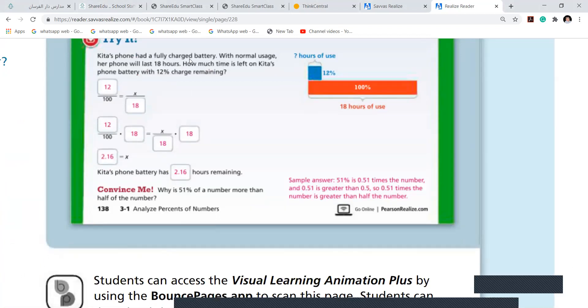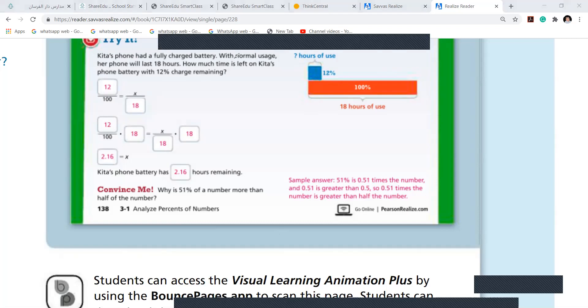Kita's phone has fully charged battery with normal usage. Her phone will last 18 hours. Normally, if she doesn't use much of things, it will last 18 hours. How much time is left on Kita's phone battery with 12% charge remaining? If it's 12% remaining, how many hours? Girls, did you remember the thing how I taught you? What proportionality? What were we doing? For 100%, it's 18 hours.